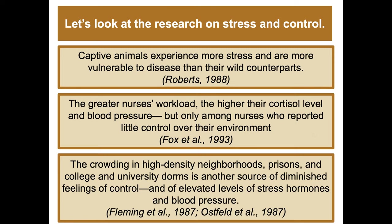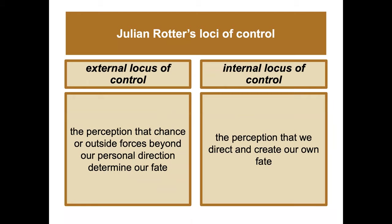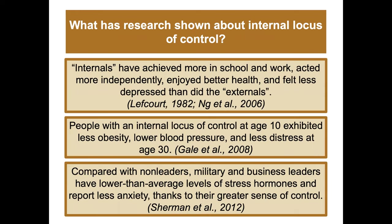Julian Rotter differentiated external and internal locus of control. People with an external locus of control perceive that chance or outside forces beyond their personal direction determine their fate. People with an internal locus of control feel they can direct and create their own fate. Research shows internals achieve more in school and work, act more independently, enjoy better health, and feel less depressed. People with internal locus of control at age 10 show less obesity, lower blood pressure, and less distress at age 30. Military and business leaders have lower-than-average stress hormone levels thanks to their greater sense of control.